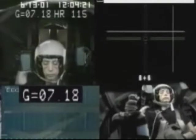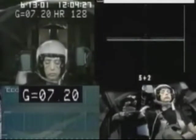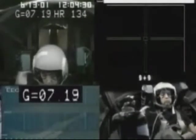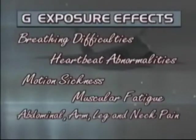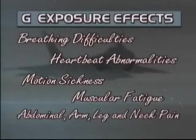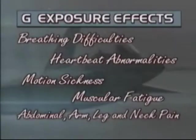Having a high onset rate of 7 G's per second, one can experience G-lock in about 4 to 7 seconds. Today's very maneuverable high-performance aircraft can achieve very high G-onset rates, which can result in sudden G-lock without any preceding visual symptoms. Other effects of exposure to positive vertical G's include breathing difficulties, heartbeat abnormalities, motion sickness, muscular fatigue, and abdominal, arm, leg, and neck pain.